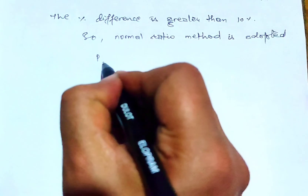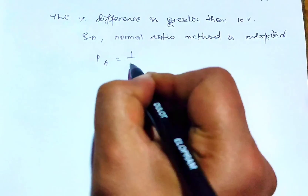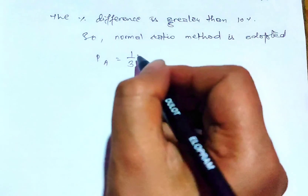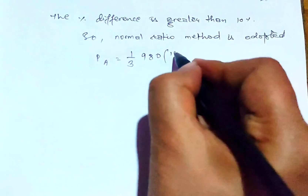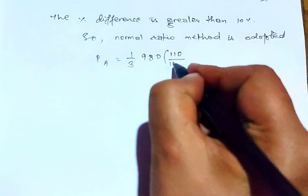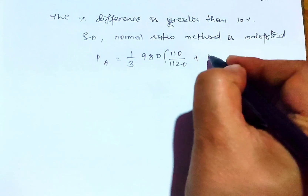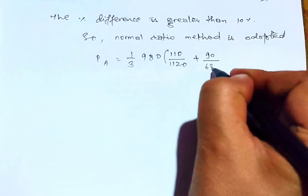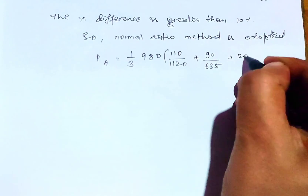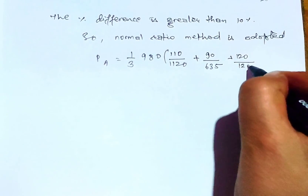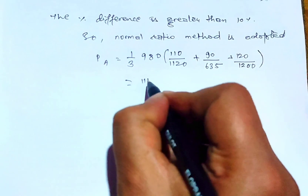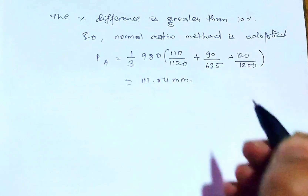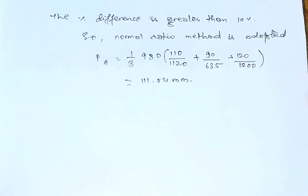We apply the normal ratio formula where P_A equals one divided by M — that is, one-third since three stations have data — times the sum of the weighted precipitation terms. Solving this, the result is 111.04 mm, which is the required rainfall at station A as per the given data.